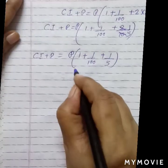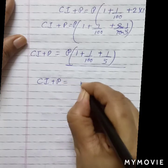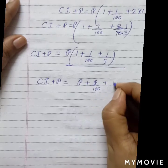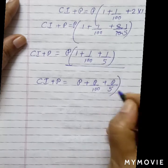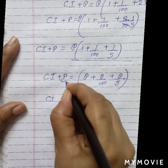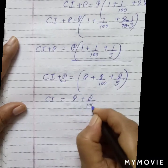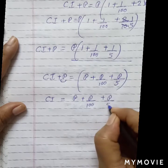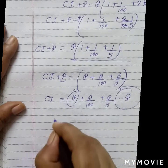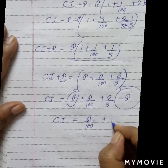Now let's open this bracket. Compound interest plus principal equals P + P/100 + P/5. Taking P to the other side: CI = P + P/100 + P/5 − P. The P terms cancel, so we are left with compound interest = P/100 + P/5.